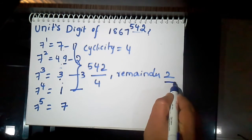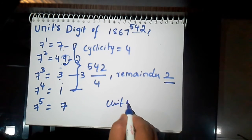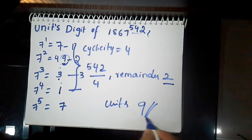Now here the remainder is 2. Now the unit's digit value is 9. Thank you.